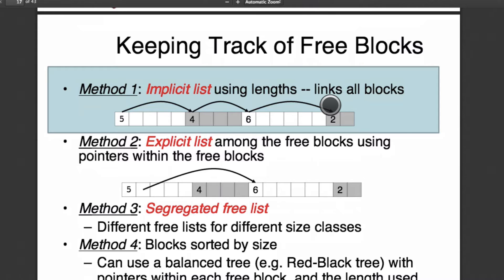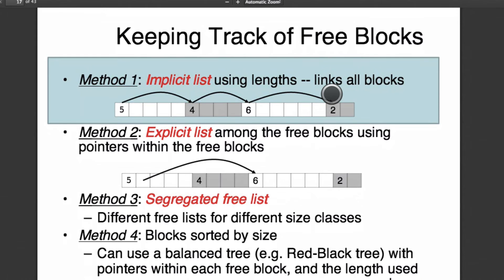And now when we have an explicit list we have something very different and something that's very cool. So an explicit list we're going to have if it's free or not and we're going to have the size. But now what we're going to do is we're going to have a pointer to the next free block. So in this explicit list, it's very important that the explicit list just has the list of the free blocks. So implicit list will have everything but explicit will just have the free blocks.